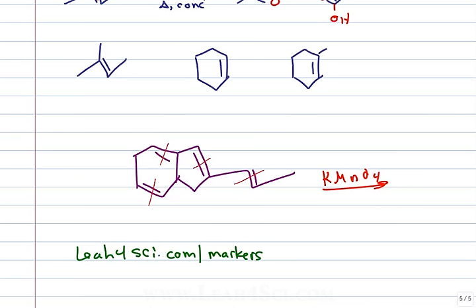Shower markers, shower crayons, bathtub crayons — they come under many names. One student uses dry erase markers on her bathroom mirror — same idea. You could do this on a whiteboard too. And sometimes you come across reagents you've never heard of. Say you're studying reactions from class, the chapter covers some, and then you get to end-of-chapter questions or a practice quiz and the reagent looks completely unfamiliar. What do you do?